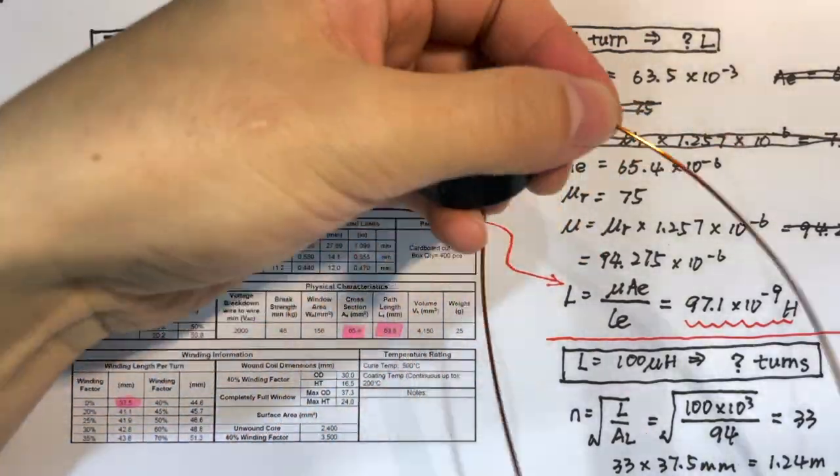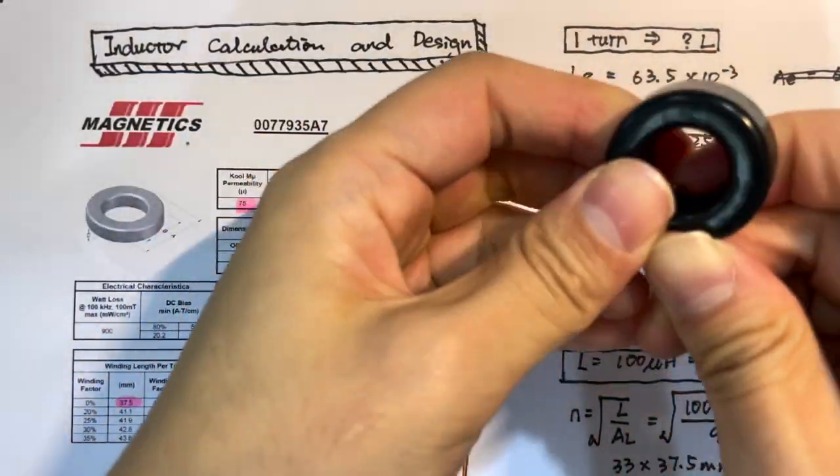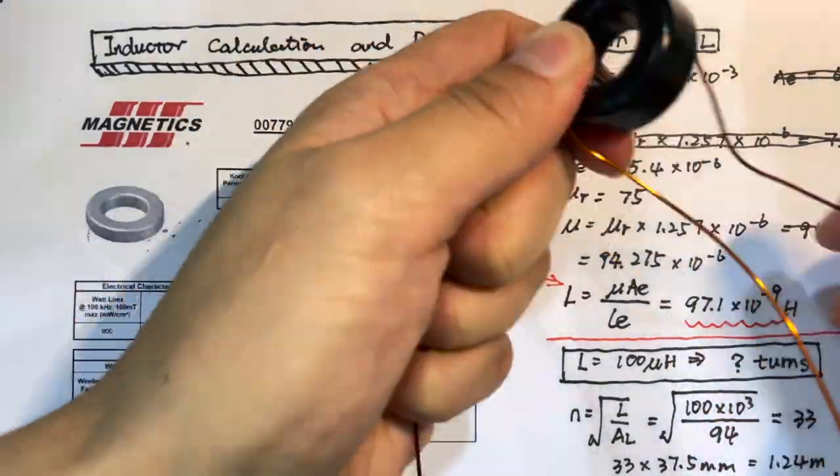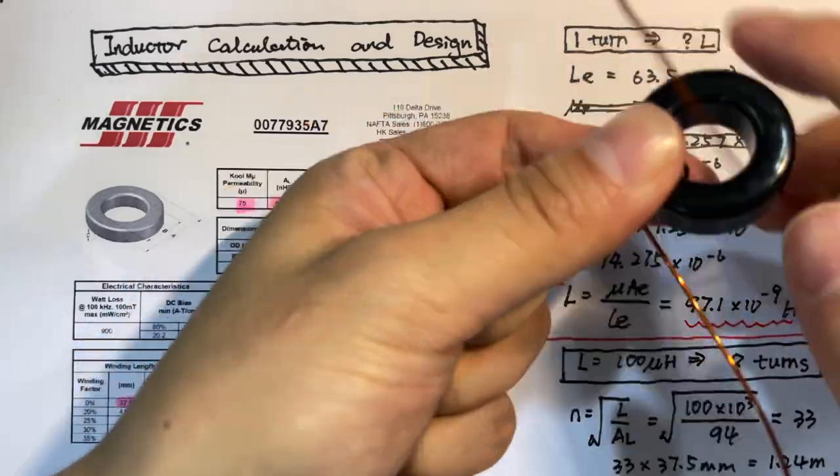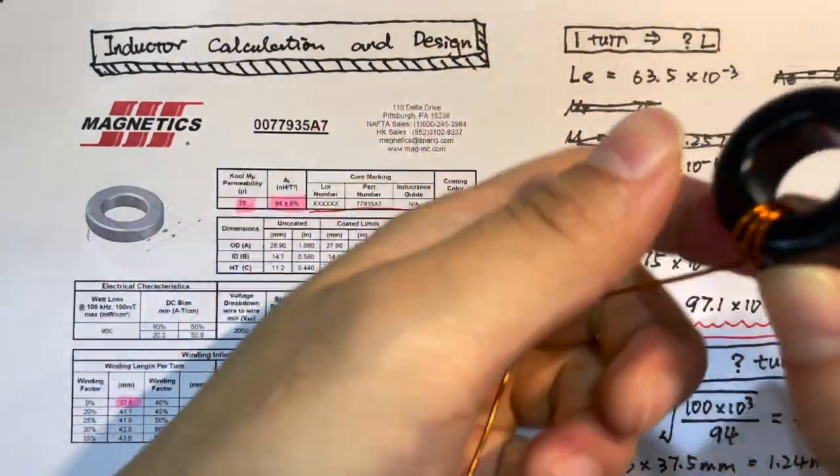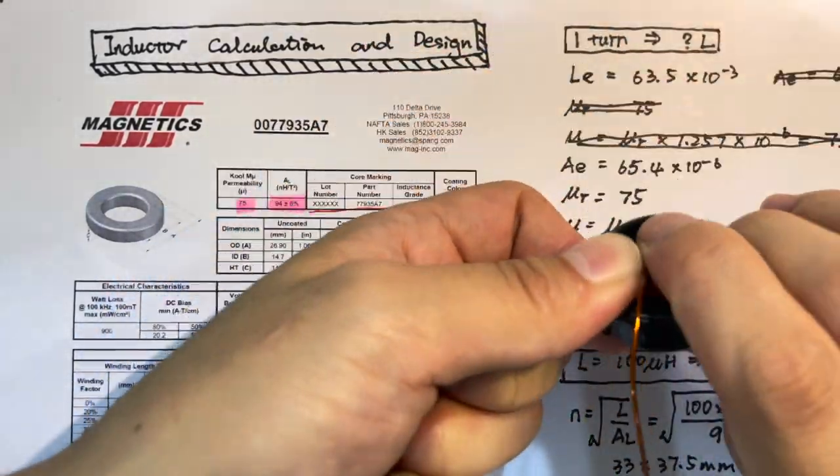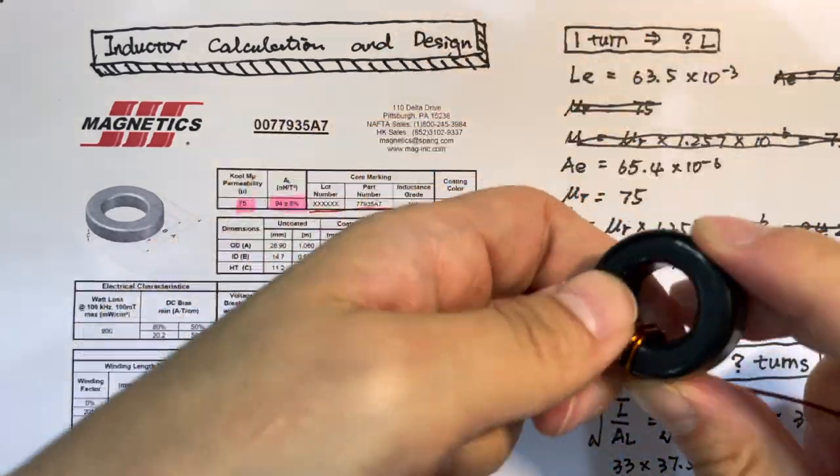When you wind your inductor, my suggestion is first start at the middle of the wire and each side wire 17 turns. Make every wire as tight as you can.